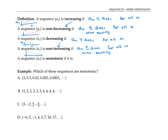Notice that increasing is a stronger condition than non-decreasing, since being strictly less than something is stronger than just being less than or equal to it. For that reason, if a sequence is increasing, it is also non-decreasing. And similarly, if a sequence is decreasing, it is also non-increasing.